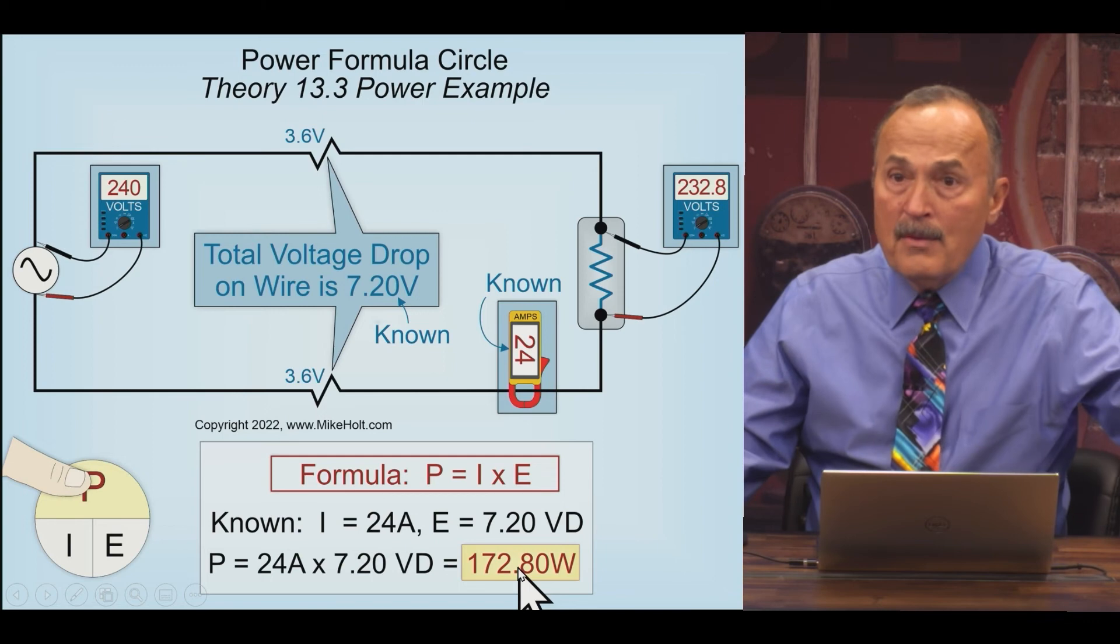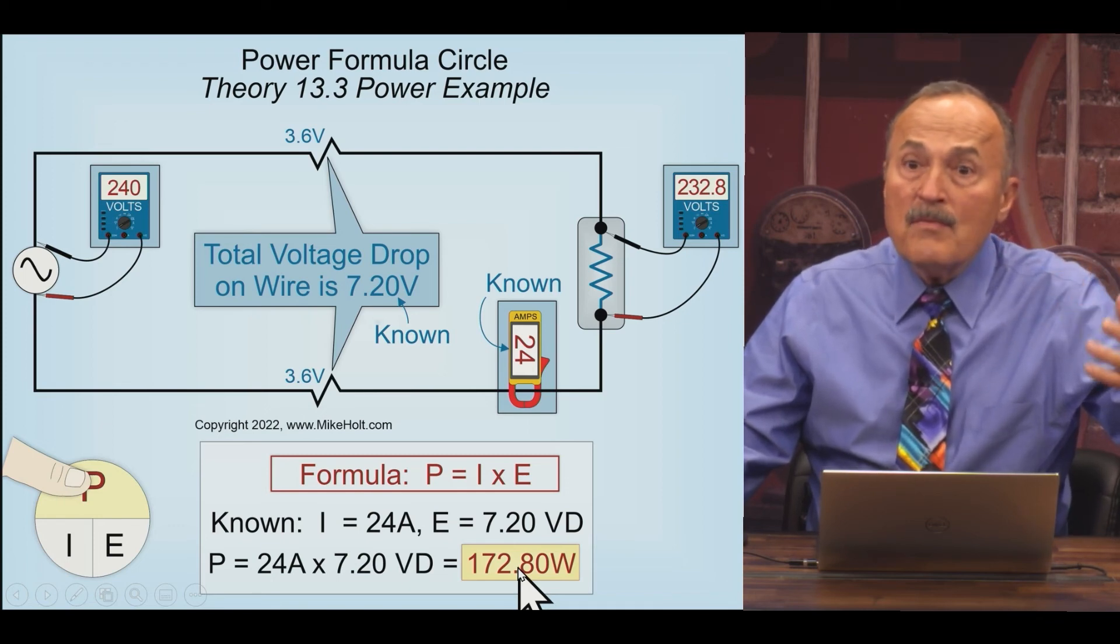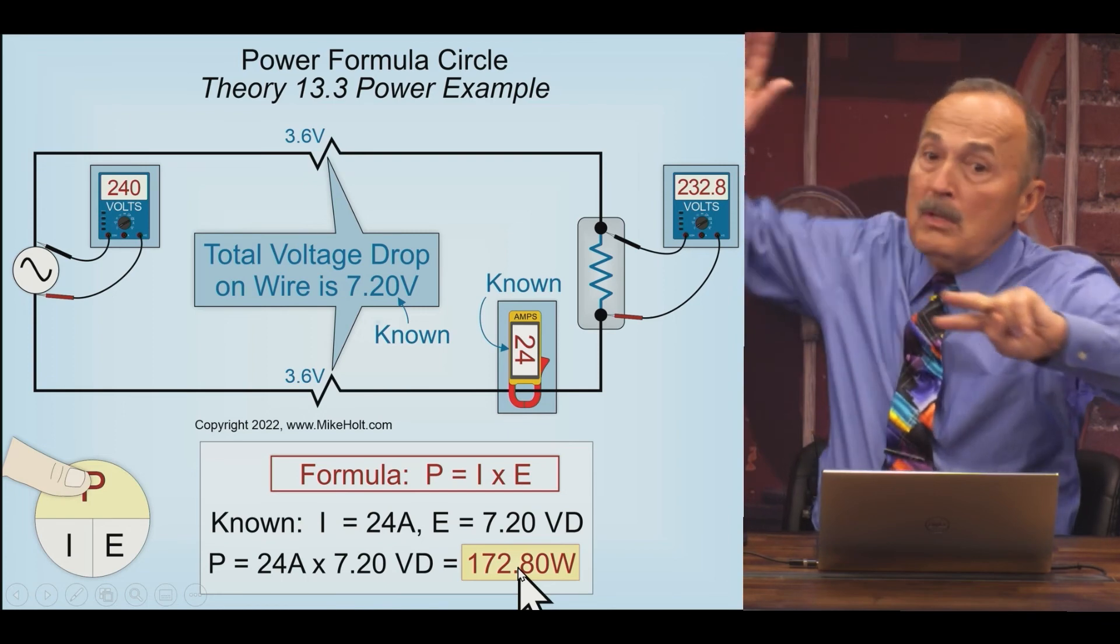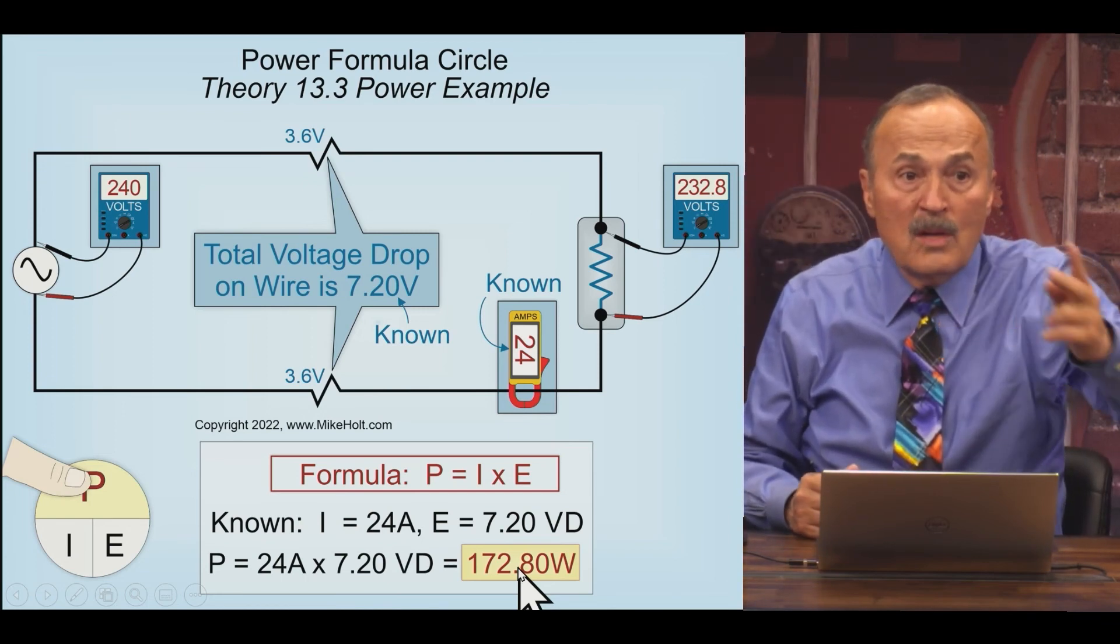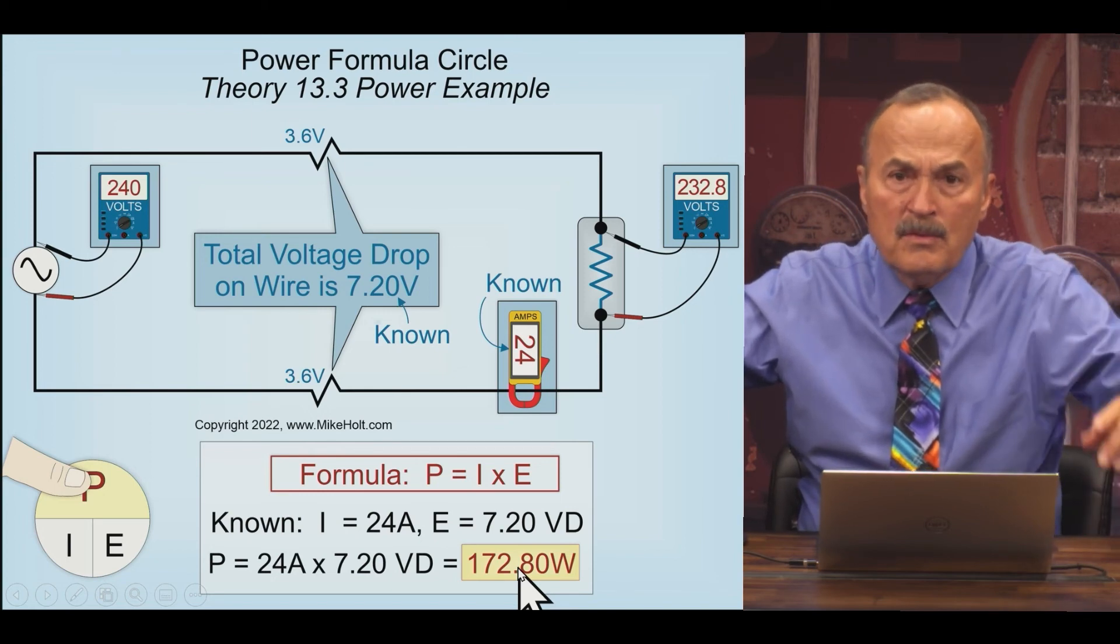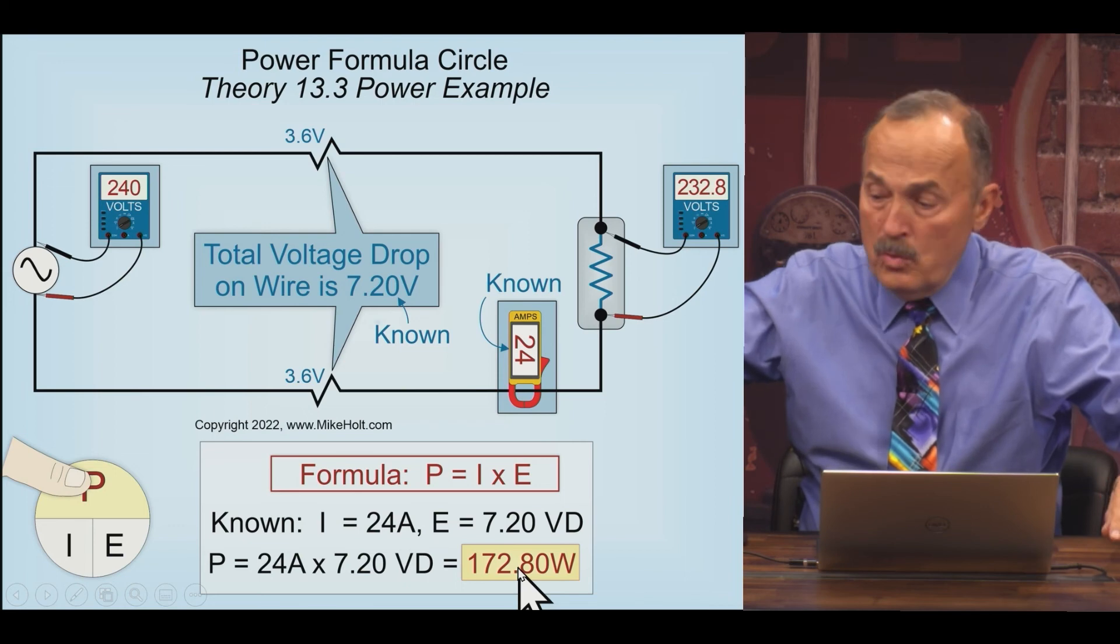And if you're paying 13 cents a kilowatt per day and you're only running it for 10 hours, it's going to be about 25 cents a day just to heat those two wires, not the whole building, just those two wires. 25 cents a day times 30, what's that come out to be? Three times, $7.50.